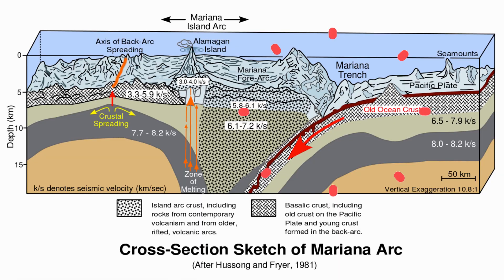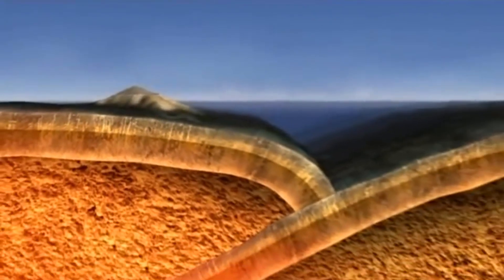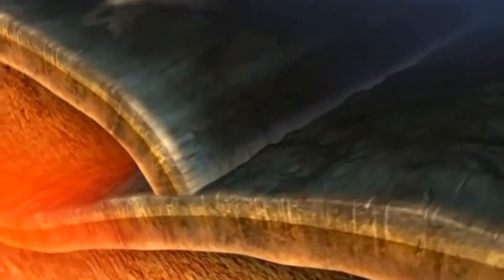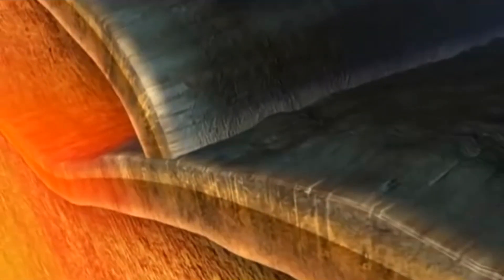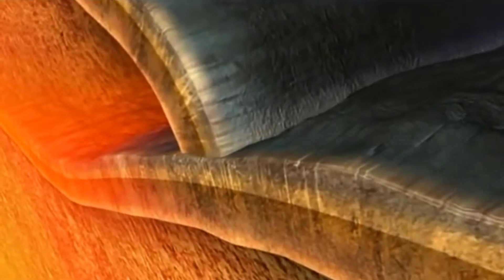Trenches tend to be very deep oceanic features, much of which has to do with the bending of the subducting plate. One well-known example is the Marianas Trench in the Western Pacific. As the plate subducts, its temperature increases, releasing water from minerals in the oceanic crust, and this water causes melting in the overlying asthenosphere.